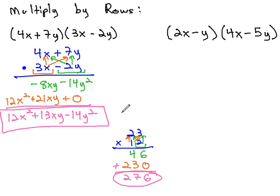Let's take a look at using this method in one more example. The second example is 2x minus y times 4x minus 5y. Let's write it out in rows, lining up our like terms. 2x minus y times 4x minus 5y.